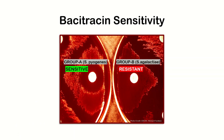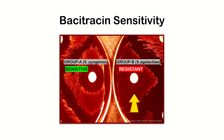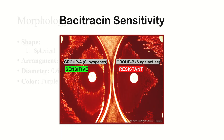As you can see, Group A strep pyogenes is sensitive to bacitracin — there is a clear zone where bacteria have been killed around the disc. On the right side, Group B beta-hemolytic bacteria, such as strep agalactiae, are resistant to bacitracin, so no bacteria are killed around the disc.